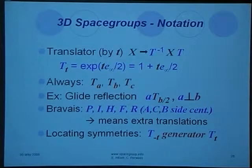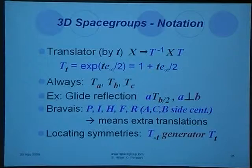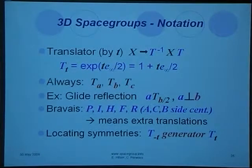A translator works like a rotor. As you see here, you see an explicit expression. In the space groups in three dimensions, we always have these basic translations T_A, T_B, T_C, so we don't need to mention them explicitly.